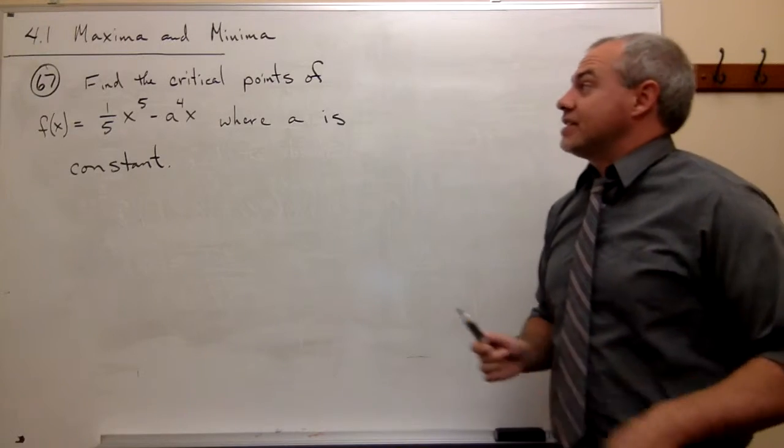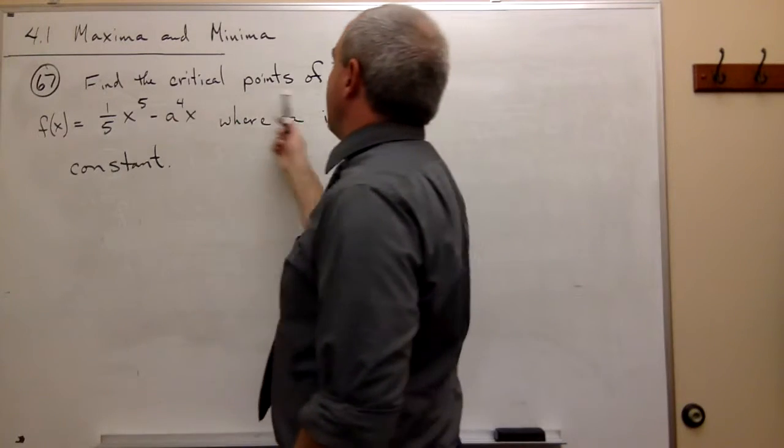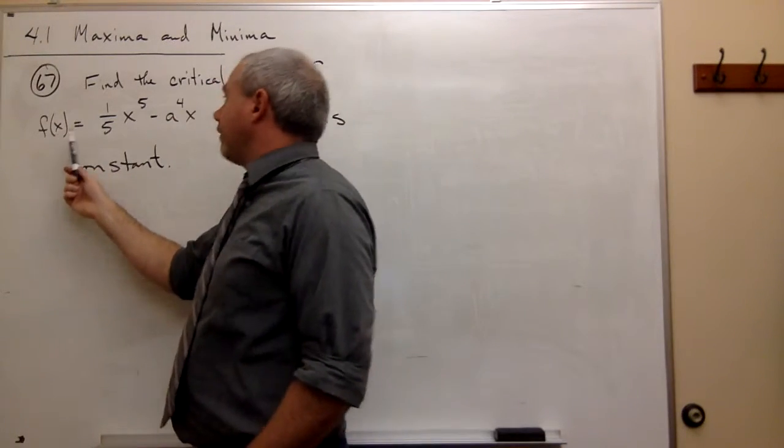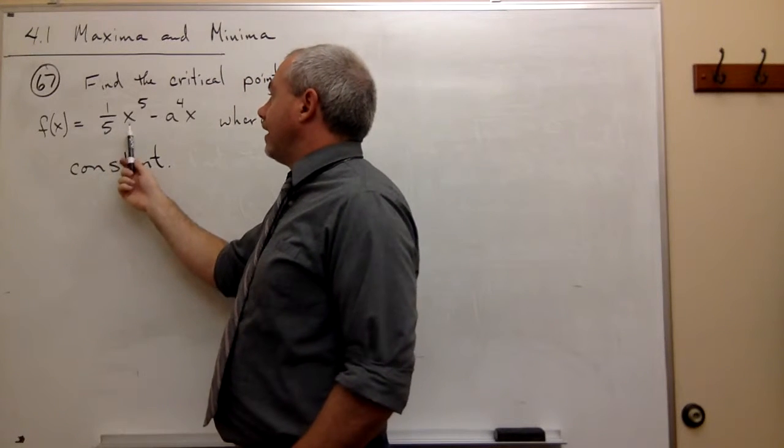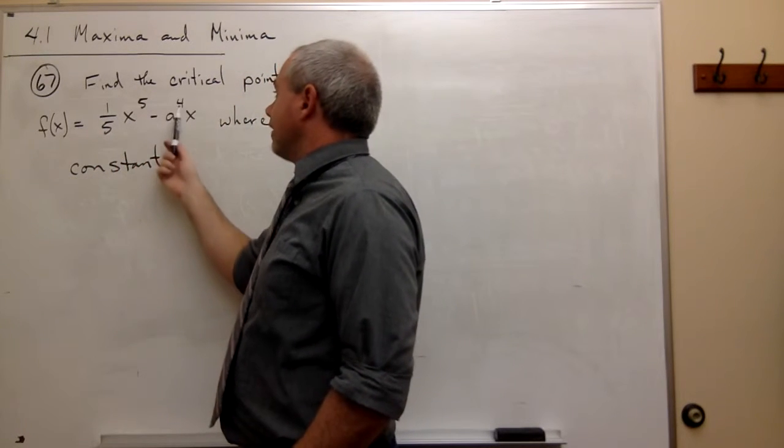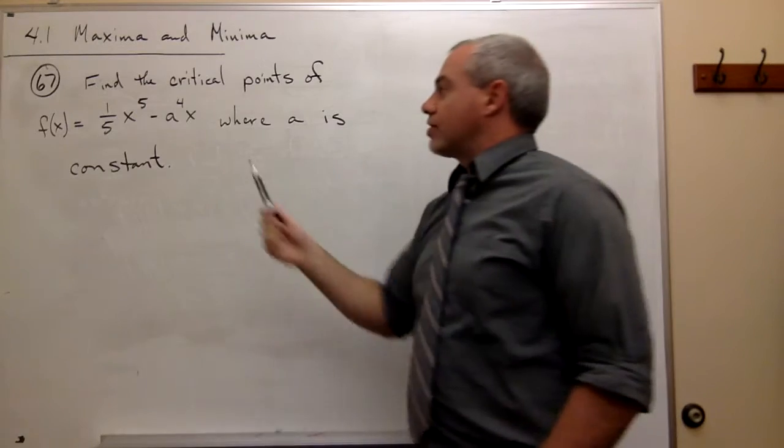Now let's look at problem number 67. I'd like to find the critical points of this function, f of x is equal to 1/5 x to the 5th minus a to the 4th x, where a is constant.